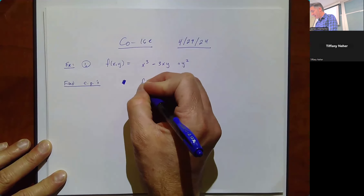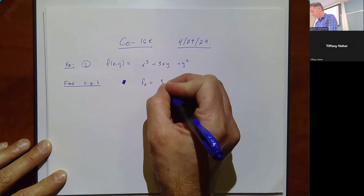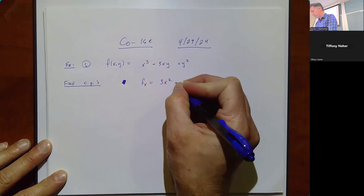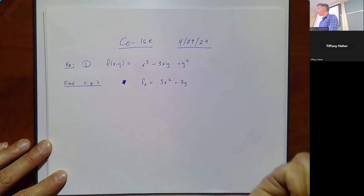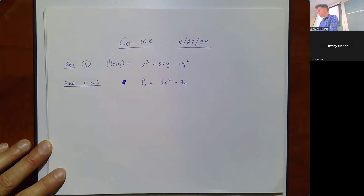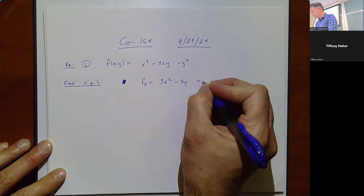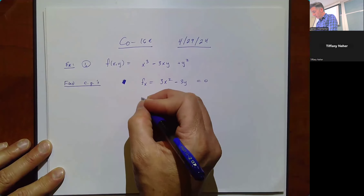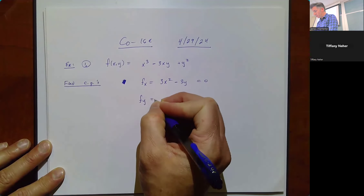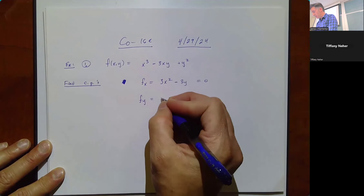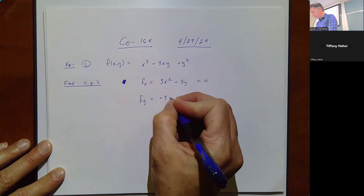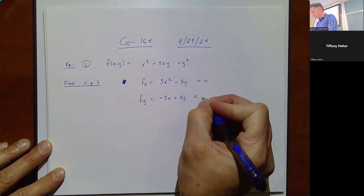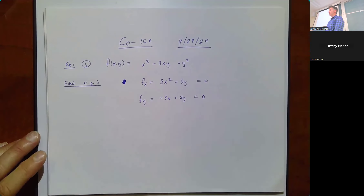We're going to take our partial derivative with respect to x, which is 3x² - 3y, and set that equal to zero. And similarly, the partial derivative with respect to y is -3x + 2y, set equal to zero.